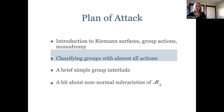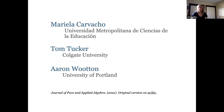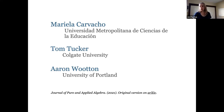For the rest of the talk I want to discuss a couple of different projects I've been involved in that get into these questions. The first is looking at a particular group and seeing how it acts — instead of asking which groups act for a given genus, we fix a group and ask how does it act, how many genera, questions like that. This is joint work with Mariella Cavarcho, Tom Tucker, and Aaron Wooten — a published paper.